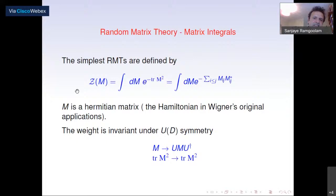The simplest random matrix theories involve a Hermitian matrix with measure e to the minus trace M-squared. In the original applications, the Hermitian matrix modeled the Hamiltonian of a complex nucleus, and the statistics of energy levels of complex nuclei were found to be rather well approximated by this very simple matrix model.